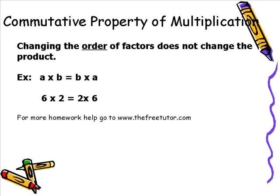Next, there's the commutative property of multiplication. This says changing the order of factors does not change the product — the product being the answer to a multiplication problem. For example, in algebra: A times B equals B times A. If you change out the variables, you could say 6 times 2 equals 2 times 6. Obviously 6 times 2 is 12, and 2 times 6 is also 12. So when you think of commutative property, think of order — changing the order does not change the product or sum.